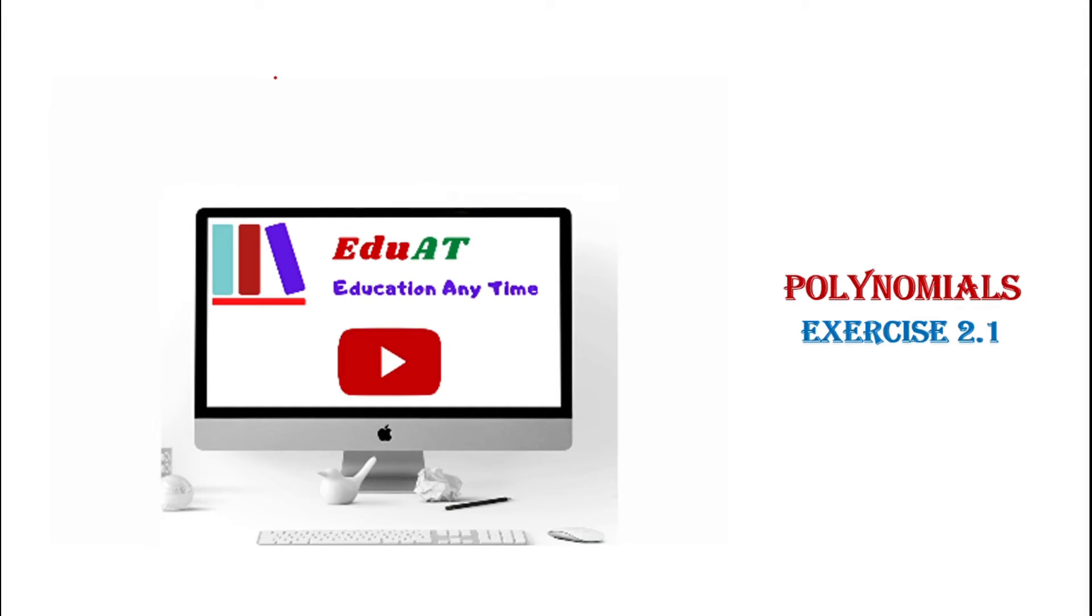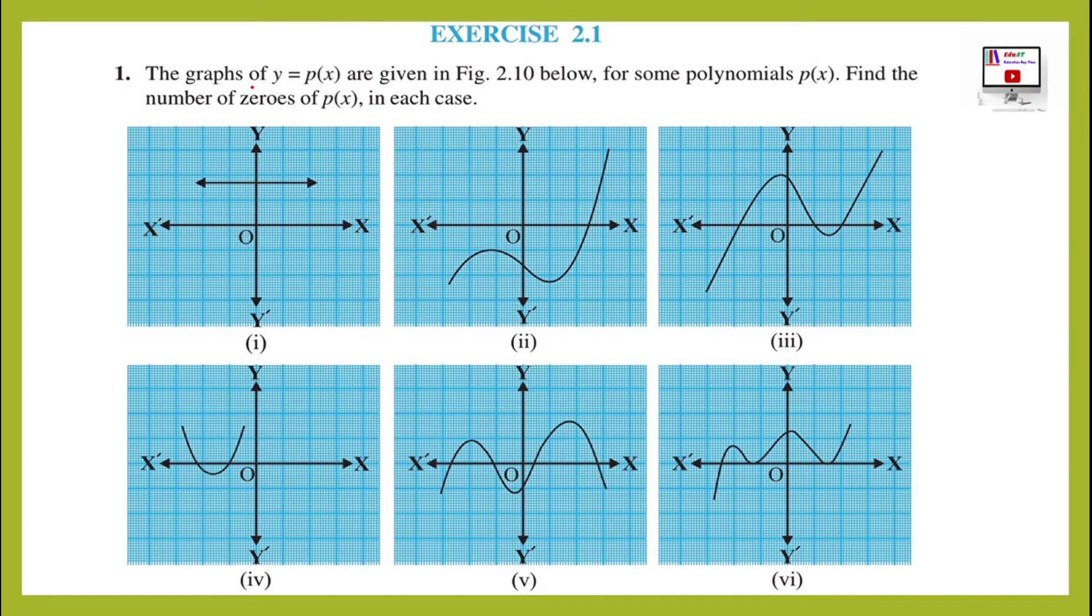Hello students, welcome to Azuate. In this video we will solve exercise 2.1. Question 1 was given: The graph of y equals p(x) are given in figure below for some polynomials p(x). Find the number of zeros of p(x) in each case.